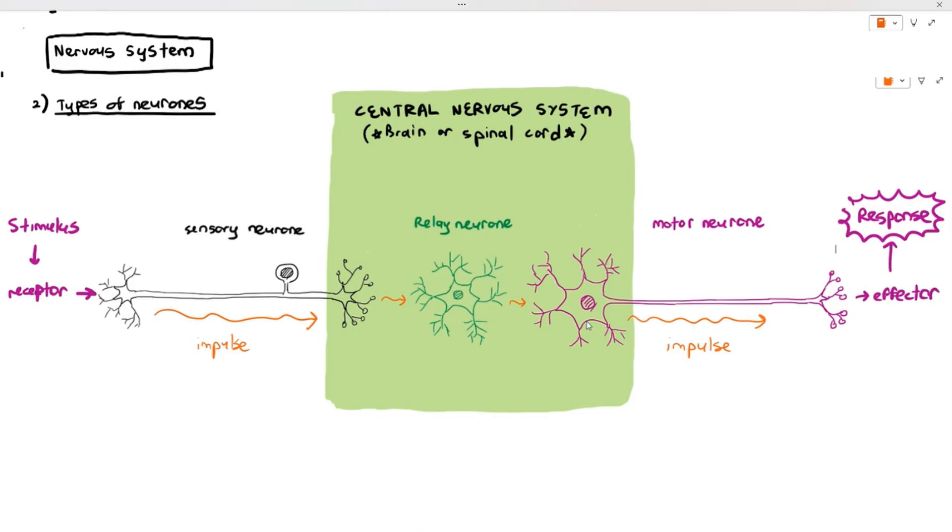The receptor sends a signal through—what neuron is that? That neuron is the sensory neuron right there. And the sensory neuron transmits the impulse to the relay neuron, and from the relay neuron, it goes to the motor neuron. And then after that, it goes to the effector.